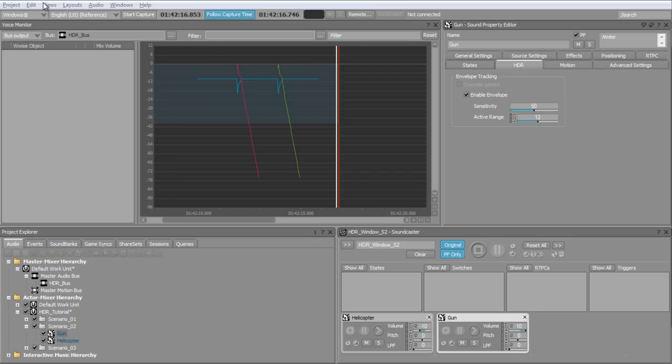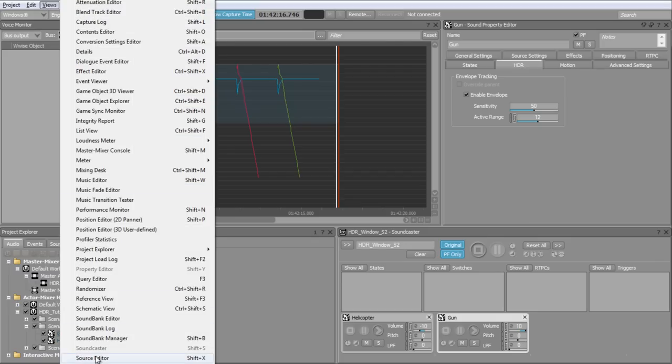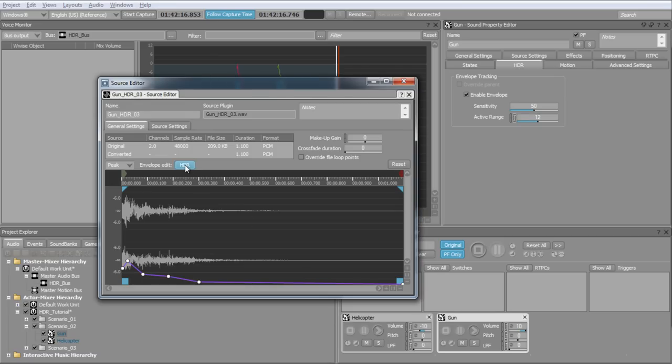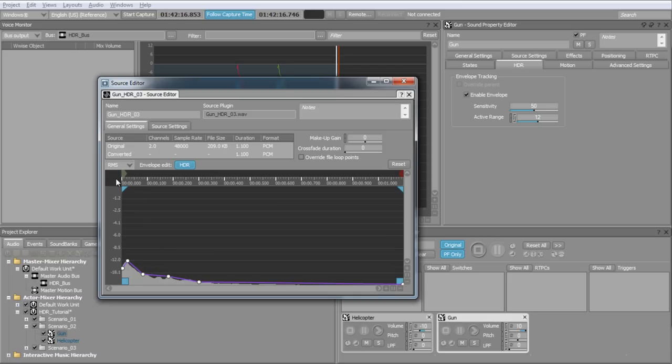Let's open the source editor view and double-click on the gun sound to display the source audio file. When a sound has the envelope activated, it is automatically displayed in purple in the view. Clicking on the HDR button will display the points on the curve. Switching to RMS in the drop-down menu collapses all channels and displays the RMS amplitude of the source audio file. This is probably the best mode to use when editing amplitude envelopes.